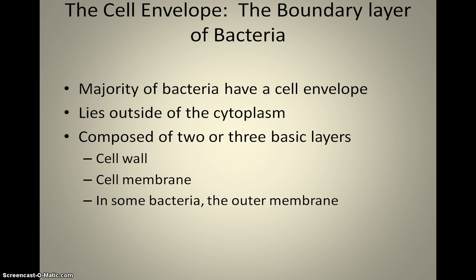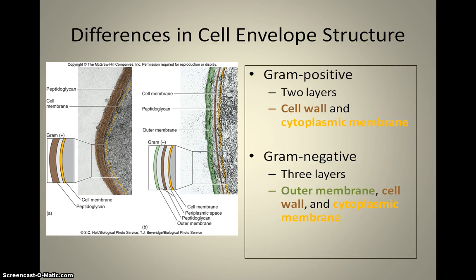A majority of bacteria have a cell wall and a cell membrane. If they have a third layer, they will also have what is called an outer membrane. So we differentiate between these two groups as having two layers or three layers — as being gram-positive or gram-negative. And essentially this is based on how they stain, which divides bacteria into two major classes. There are some that lie outside of this, but most fall into either gram-positive or gram-negative.